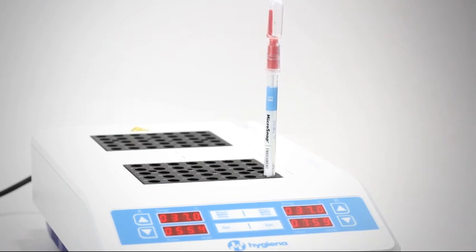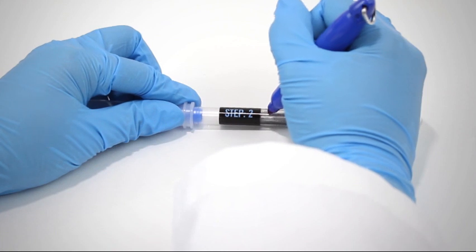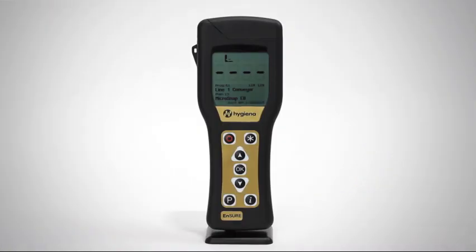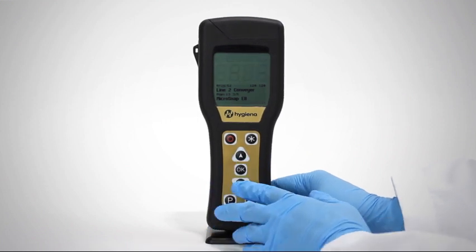Refer to the complete instructions for details. The second step is detection. Allow the detection device to acclimate to room temperature before testing. Write the location or product on the tube label for easy identification. Turn on the Ensure Luminometer. If you program locations, select the location to be tested.